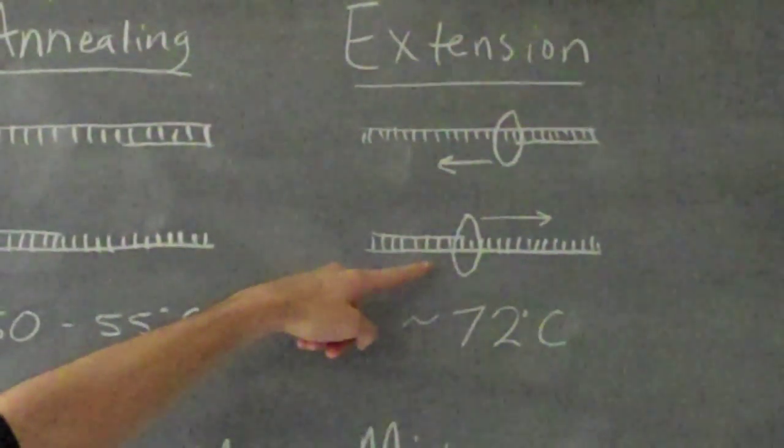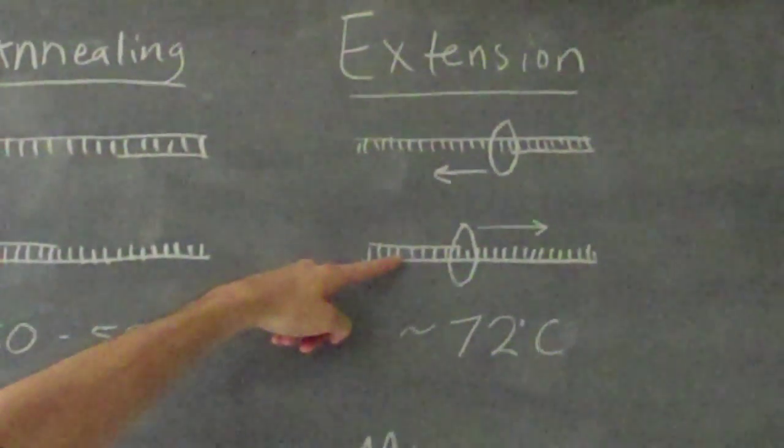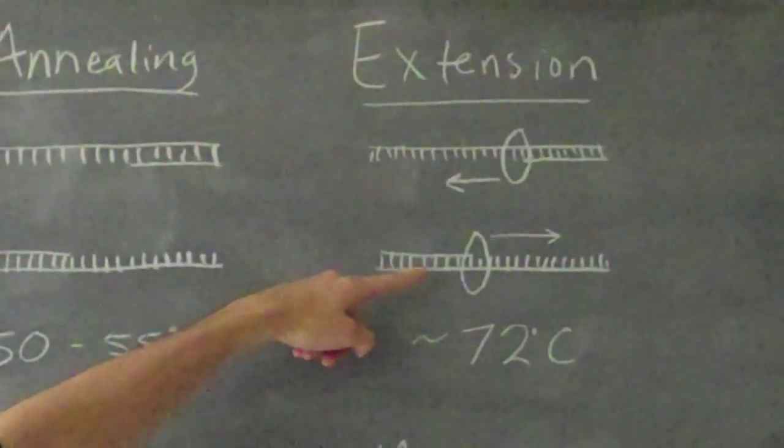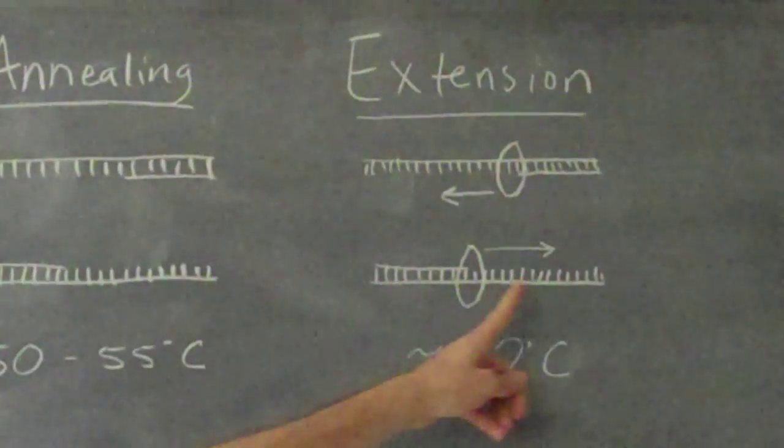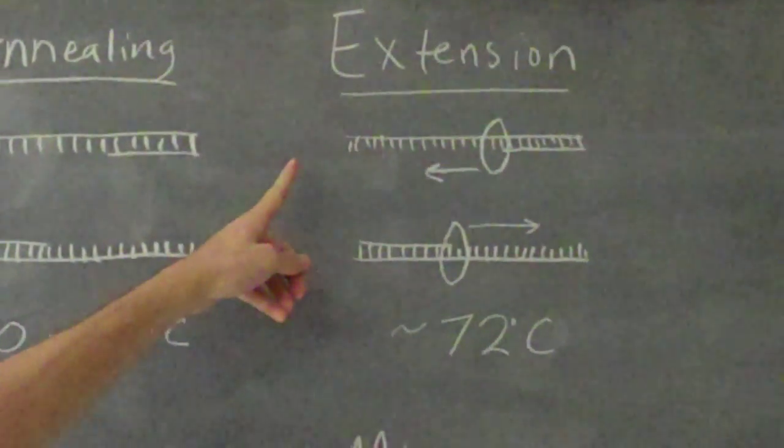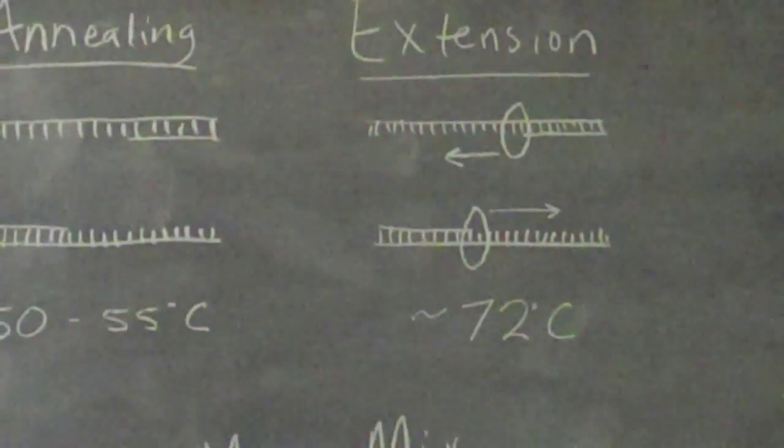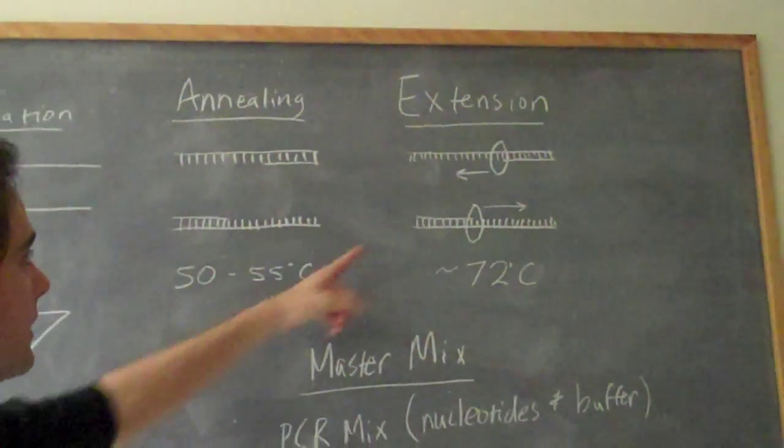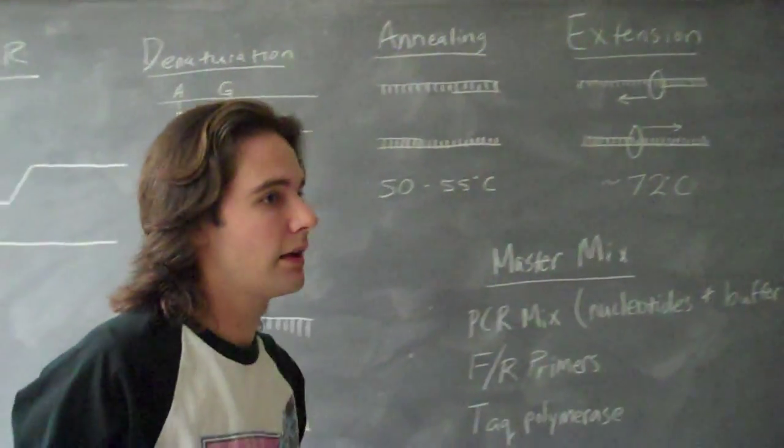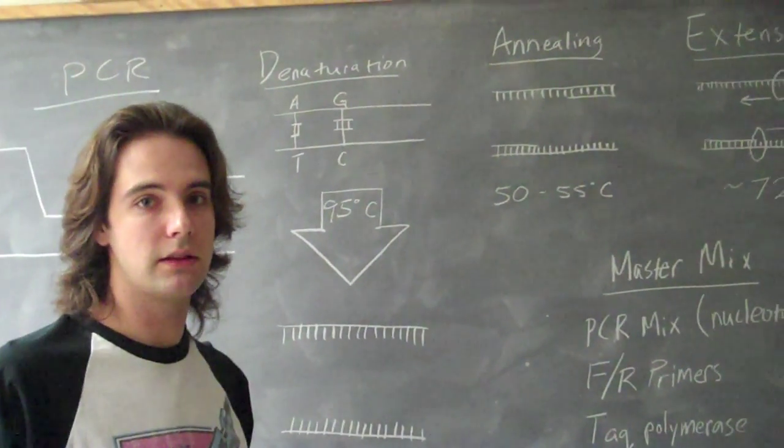DNA polymerase attaches to the annealed primer and incorporates free nucleotides to extend out in either direction, either forward or reverse, relative to the start site. In this way, one strand turns into two strands, and the more times you repeat it, the more strands you get.